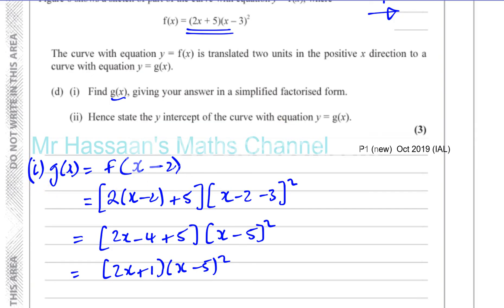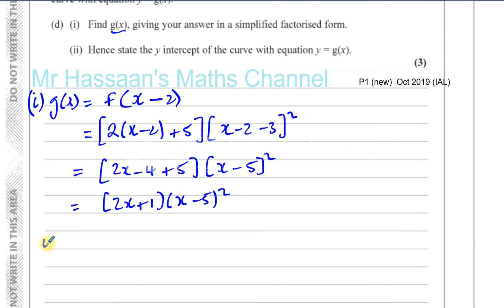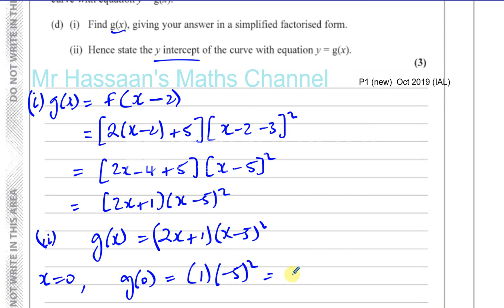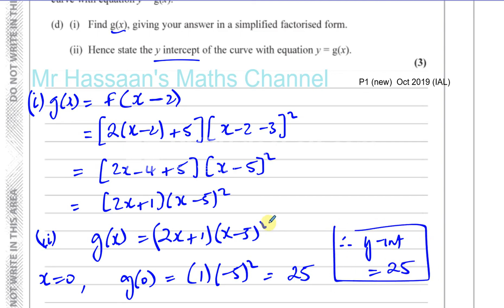Part D part 2 says: hence state the y-intercept of the curve y equals g of x. We know g of x equals 2x plus 1 times x minus 5 squared, and the y-intercept is when x equals 0. So g of 0 equals 1 times minus 5 squared, which is 1 times 25, giving 25. Therefore the y-intercept is 25. And that's question number 10 completed.